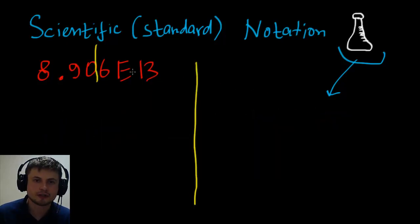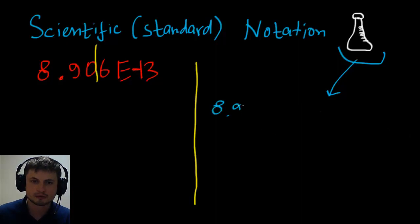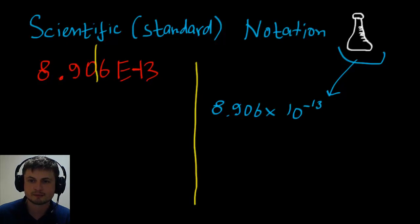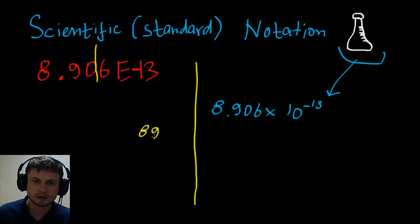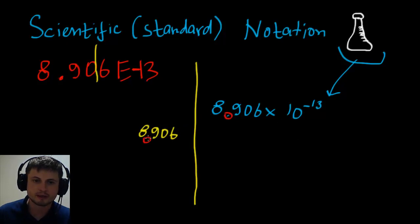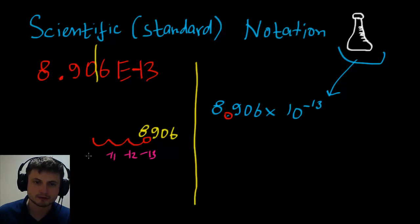Let's change this to a negative: 8.906E-13. For scientific notation, we rewrite it as 8.906 times 10 to the power of minus 13. For decimal notation, we now have to start from the right side because we're adding zeros to the left. Write 8, 9, 0, 6, and count from that position — going from minus 13 to minus 12, minus 12 to minus 11, minus 11 to minus 10, and so on all the way down to zero.